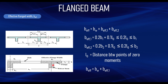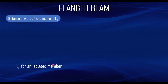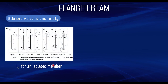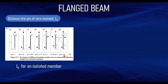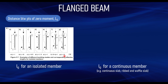L0 is the distance between points of zero moment, as described in the code. For an isolated single-span member with pin-pin support at both ends, the effective L0 equals the full span length — this is figure 5.7a of the code. When the end is cantilevered with a free end on the other side, the effective length is twice the length. For a fixed end with a pin support, such as a propped cantilever, the effective length is 0.7L.